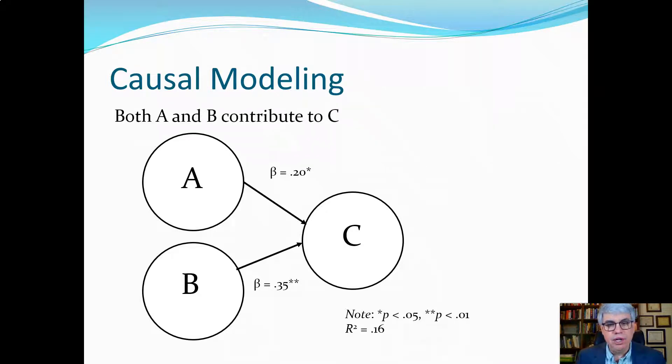And then we also note what the r squared is and here it equals 0.16, that means that 16% of the variation in C is predicted by A and B.